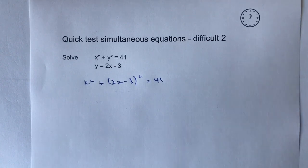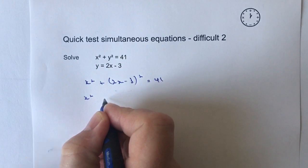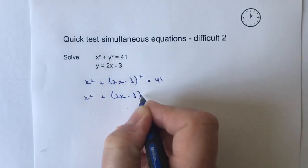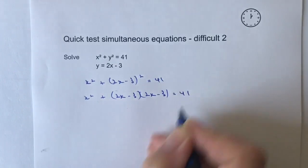Alright, so let's just expand that and see where we end up. So I've got x squared plus, and it's going to be 2x minus 3 times 2x minus 3 equals 41.